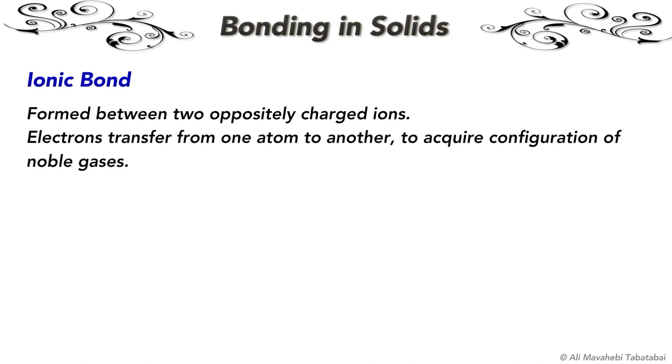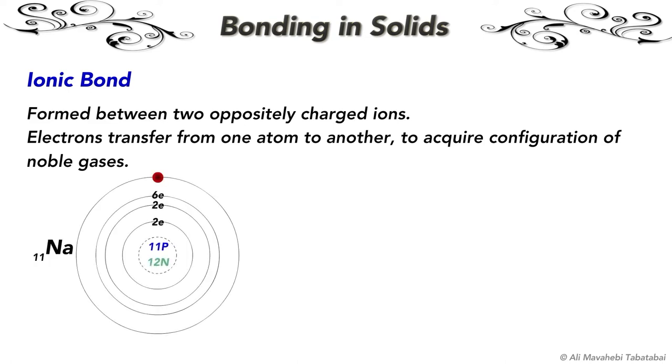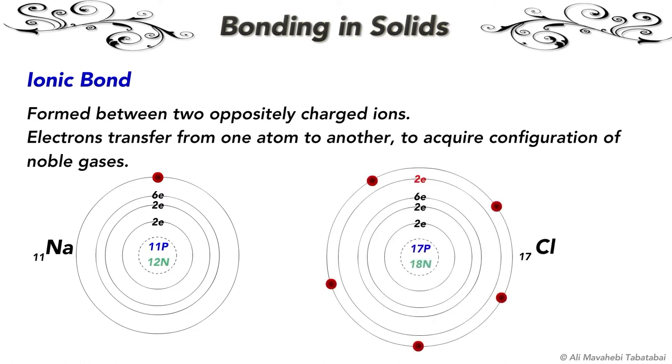In the previous video, we saw how atoms lose or gain electrons to achieve the configuration of noble gases. If an atom like sodium, which is losing an electron, comes close to another atom like chloride that tends to gain an electron, sodium gives an electron to chloride and both atoms become oppositely charged ions.